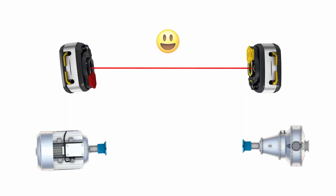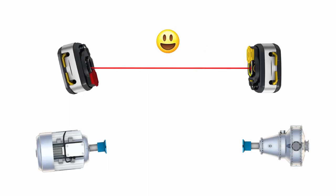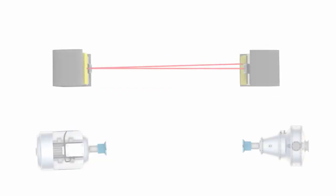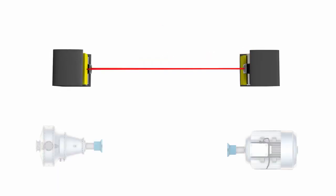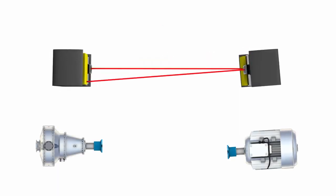Luckily, if you are using Pruftechnik single laser alignment equipment, you may easily interchange the laser and sensor. However, this is not an option if you are using a dual laser alignment system with two lasers.